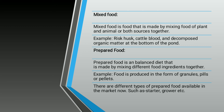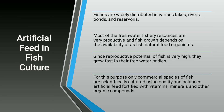Mixed food is made by mixing both plant and animal sources; examples include rice, cattle blood, and decomposed organic matter from the bottom of the pond. Prepared food is a balanced diet made by mixing different food ingredients together, produced in the form of granules, pills, or pellets. Different types of prepared food are available in the market such as starter, grower, fingerling, and fry stage feeds.